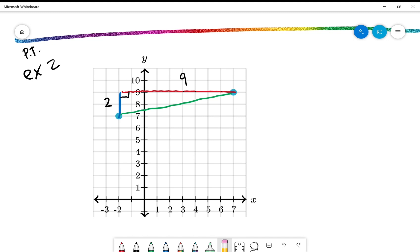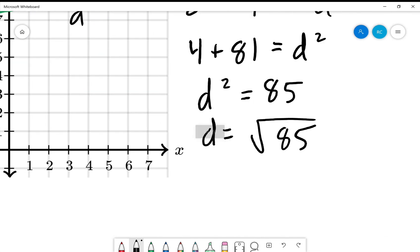So now we can set up the Pythagorean theorem. Two squared is four, nine squared is 81. That means that D squared is 85, which makes D the square root of 85. Now let's see here. Square root of 85. 85 is five times 17. No wait, 85 is five times 17.